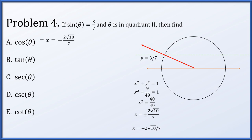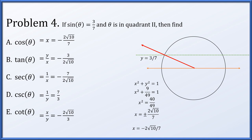The cosine of theta is the x-coordinate, −2√10/7. The tangent is y/x: dividing 3/7 by −2√10/7 gives −3/(2√10). The secant is 1 over the x-coordinate, so we reciprocate it. The cosecant is the reciprocal of the y-coordinate 3/7, giving 7/3. The cotangent is x/y, which is −2√10/3.